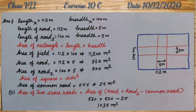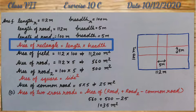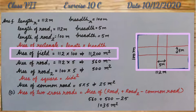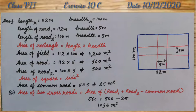We can see rectangles are given. So, area of rectangle equal to length multiplied by breadth. Therefore, area of field is 11,200 meter square. Area of road 1, 560 meter square. Area of road 2, 500 meter square.